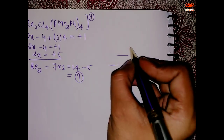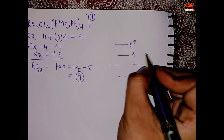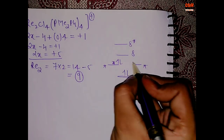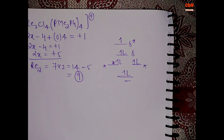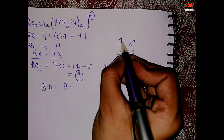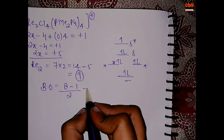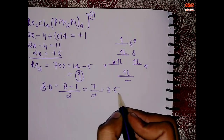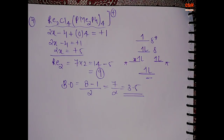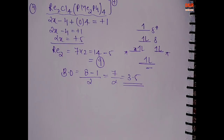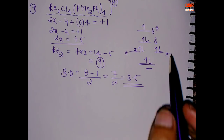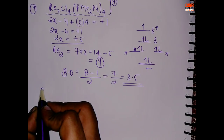Fill 9 electrons into sigma, pi, pi, delta, delta*: 1, 2, 3, 4, 5, 6, 7, 8, 9. Bond order = (8 bonding − 1 anti-bonding) / 2 = 7/2 = 3.5. I believe this type of question has come in the CSIR examination where the bond order was 3.5. You can solve any question by just drawing this MO diagram.